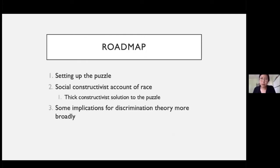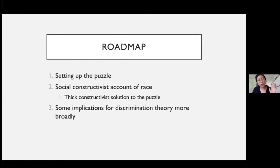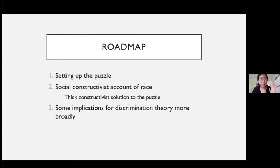Here is the roadmap for today's talk. I'm going to set up the puzzle, then pursue a solution — not by elaborating a distinctive account of discrimination, but rather a social constructivist account of race. I'll especially discuss a subset of social constructivism which I'll call thick constructivism, and show how that offers a solution to the puzzle. Then I'll talk about some implications for discrimination theory more broadly.